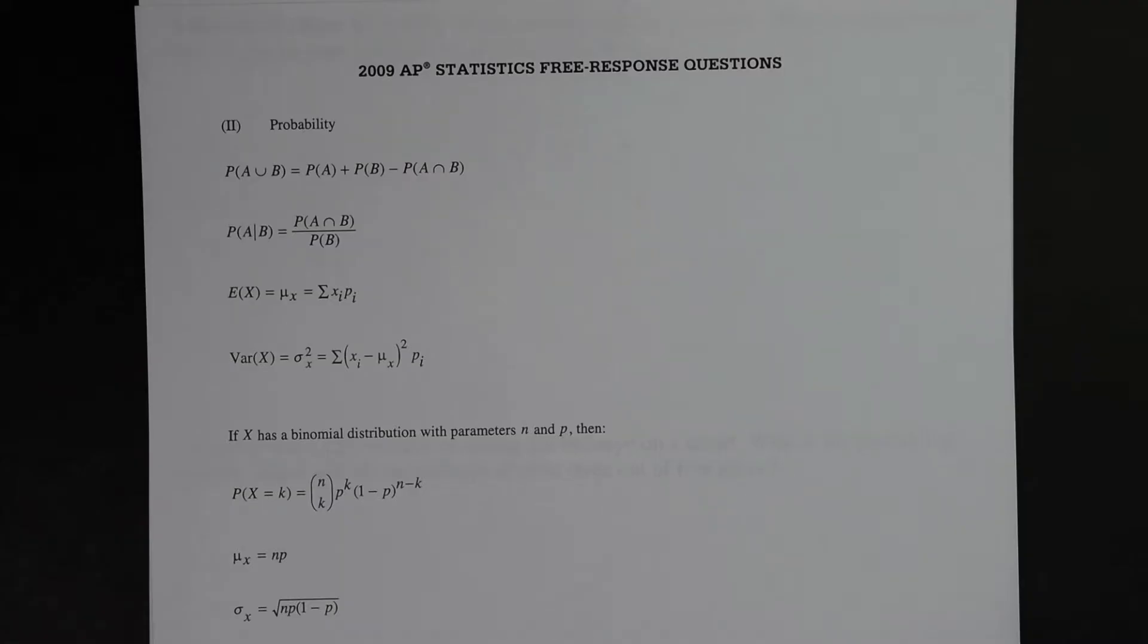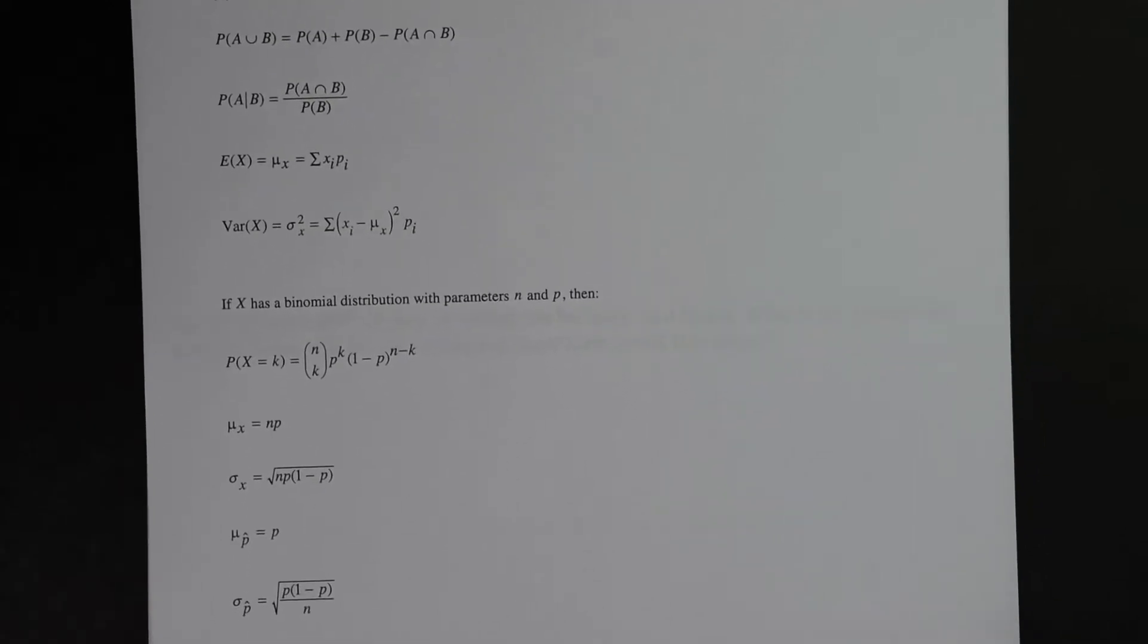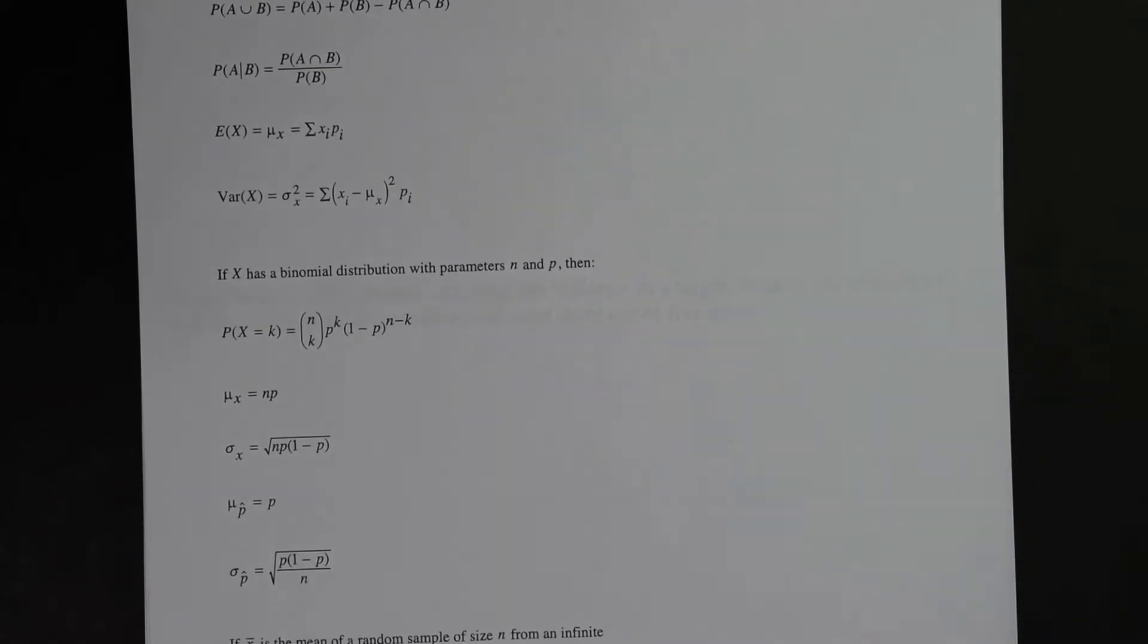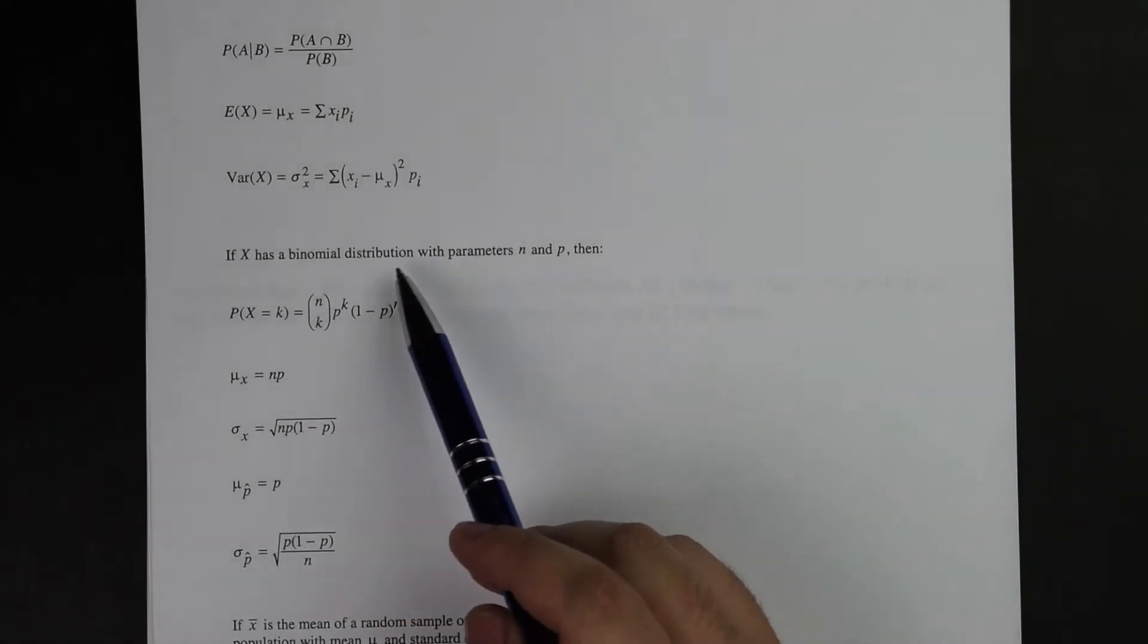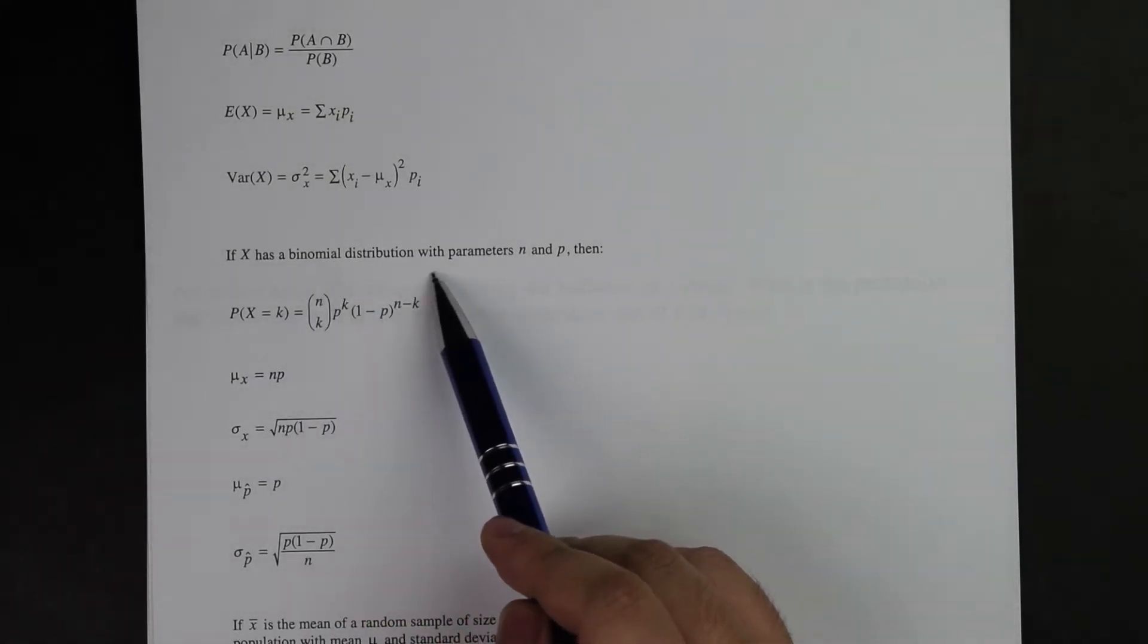In front of me is the 2009 AP Stats free response questions. They always provide this every year, it looks exactly the same. It's important for you to know what tools are provided to you from College Board on this exam. In front of me is this equation bank that they do provide on the exam. They tell you right here this is the binomial distribution with parameters n and p.